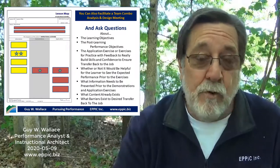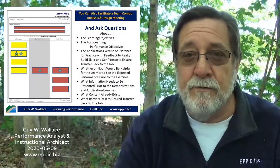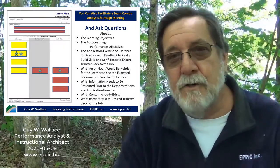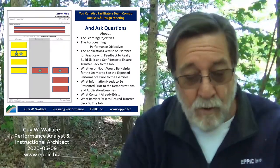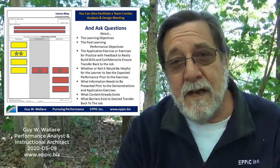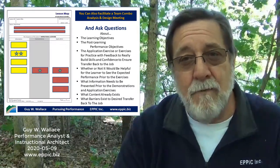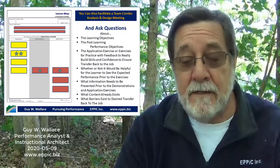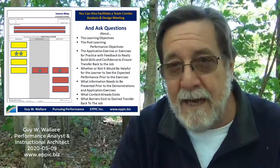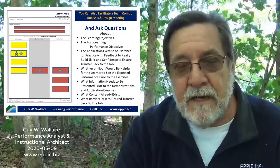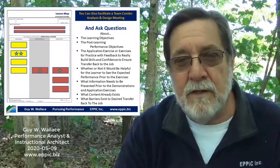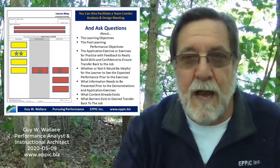Then we sort out the information, deciding which yellow box goes first, second, third, fourth — maybe there's a logic to the sequence, maybe there isn't and it could be in any order. That allows us to take the analysis data and form a lesson map of instructional activities. All the boxes in the information column, demonstration column, and application column are instructional activities — and that's another level of design I'll go into in a subsequent video. So that's beyond what we're going to cover today.